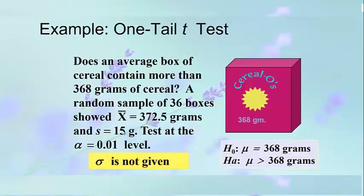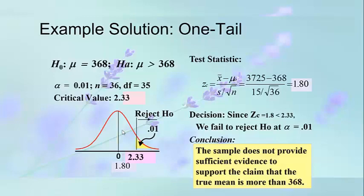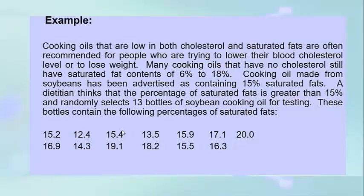This example demonstrates a one-tailed t-test using the same question and data, but now sigma is not given. The hypothesized value is 368 grams. H₀: mu = 368 grams; Hₐ: mu > 368 grams. We use the t-test solution for one-tailed tests.